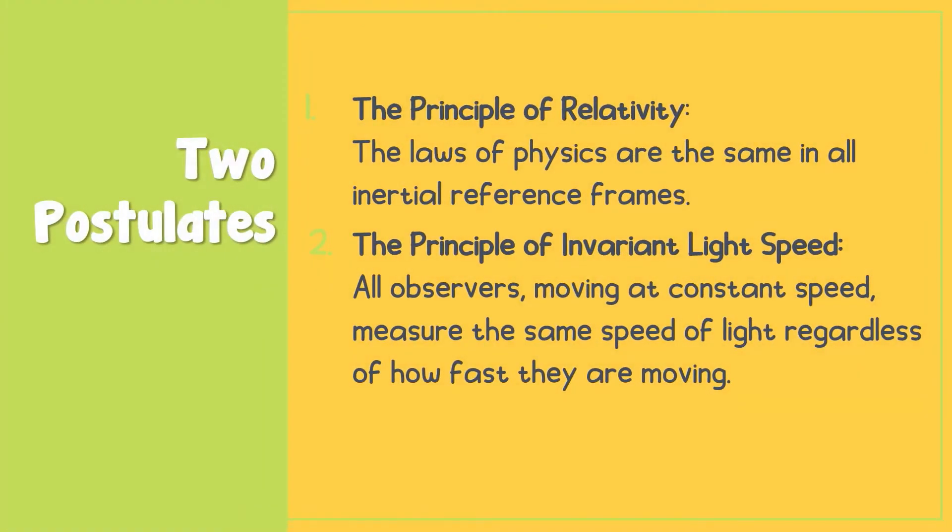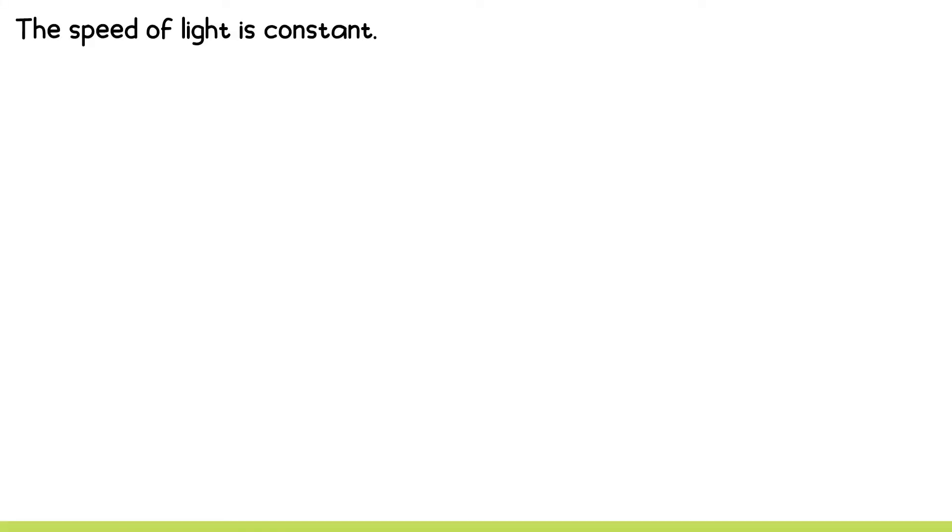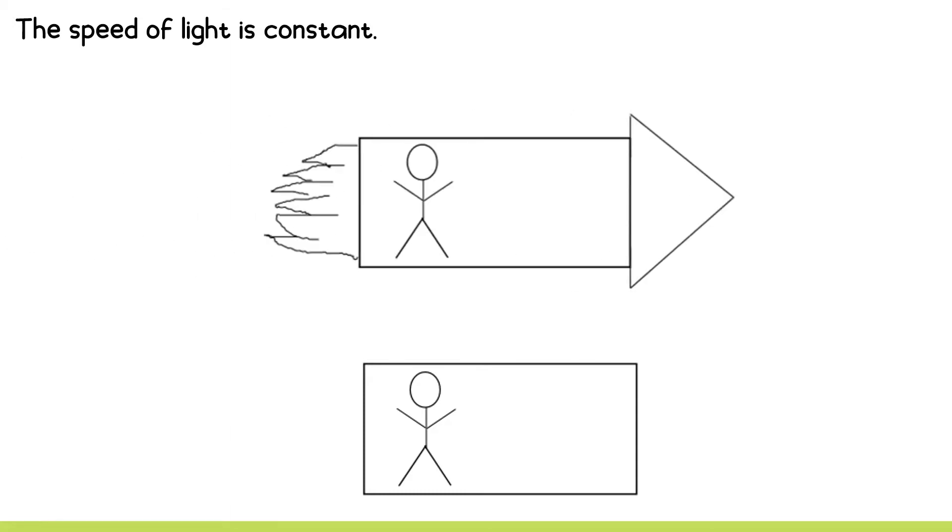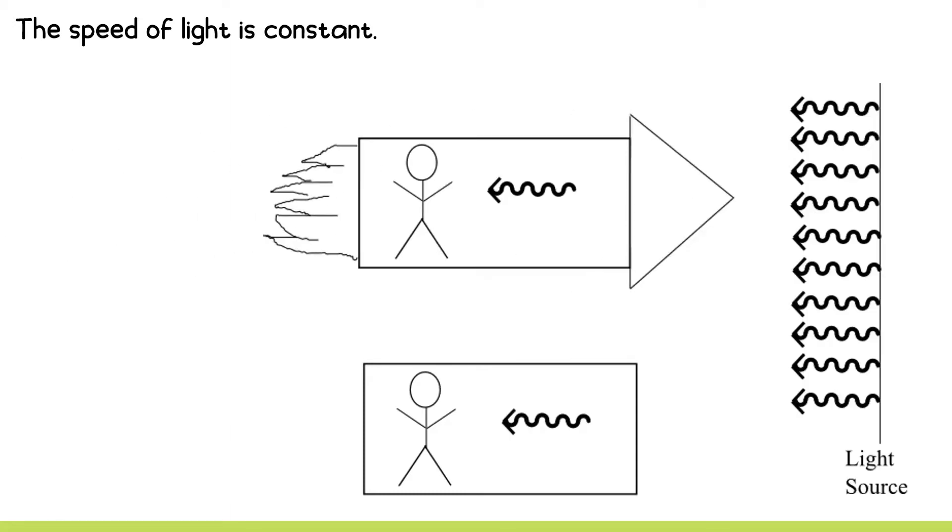Special relativity has two postulates. First is the principle of relativity and second is the principle of invariant light speed. The theory states that the speed of light is constant. So whether you are in your bedroom or in a moving rocket, the speed of light is still the same.